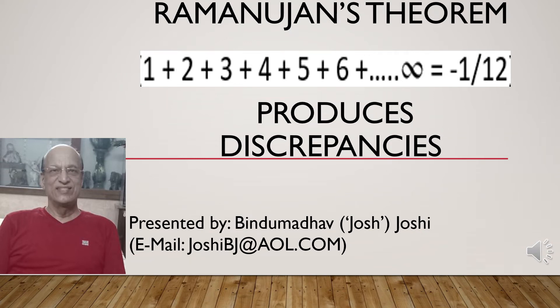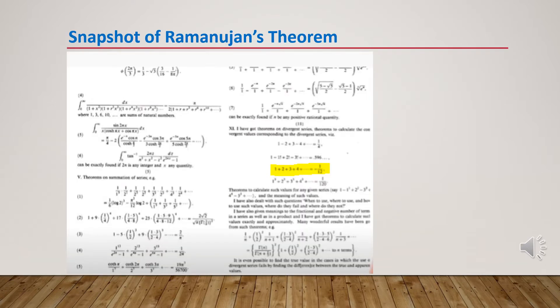Hey guys, my name is Bindu Madhav Joshi, or in short Josh Joshi. Today I'm going to present Ramanujan's theorem: 1 plus 2 plus 3 plus 4 plus 5 plus 6, etc., up to infinity is equal to minus 1 by 12. This produces discrepancies. Here is a quick snapshot of Ramanujan's theorem from his notebooks, highlighted in yellow: 1 plus 2 plus 3 plus 4 is equal to minus 1 by 12.